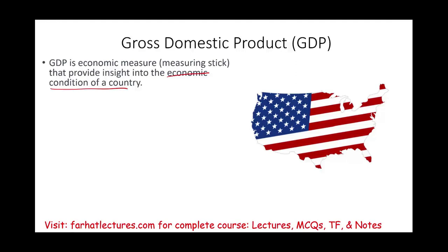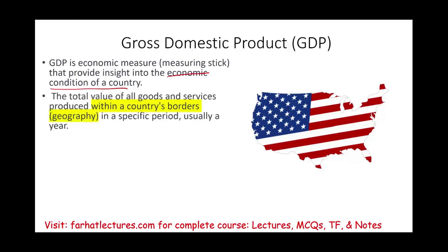We know how well we are doing from year to year because if we are using the same measurement, we can compare how well we did this year versus last year. Also, if we are comparing our GDP in the U.S., we can compare our GDP to Canada. So it's a measuring stick that helps us compare GDP across certain countries. How is GDP usually measured? It's the value of all goods and services within a country's border in a specific period, usually a year.